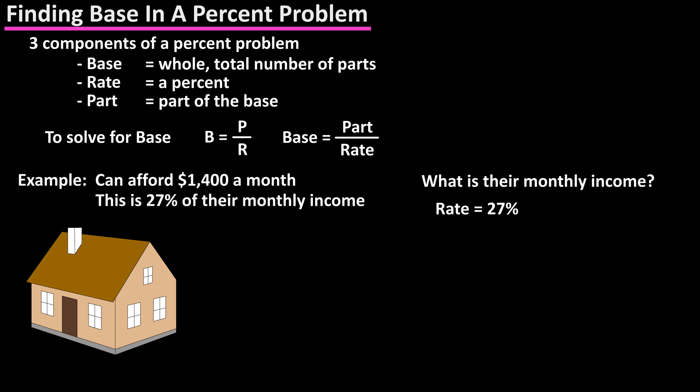Here we know the rate is 27% and we know the part is $1,400 of the total. So we need to solve for the base, the total amount. Base equals part over rate, so we have $1,400 over 27%.